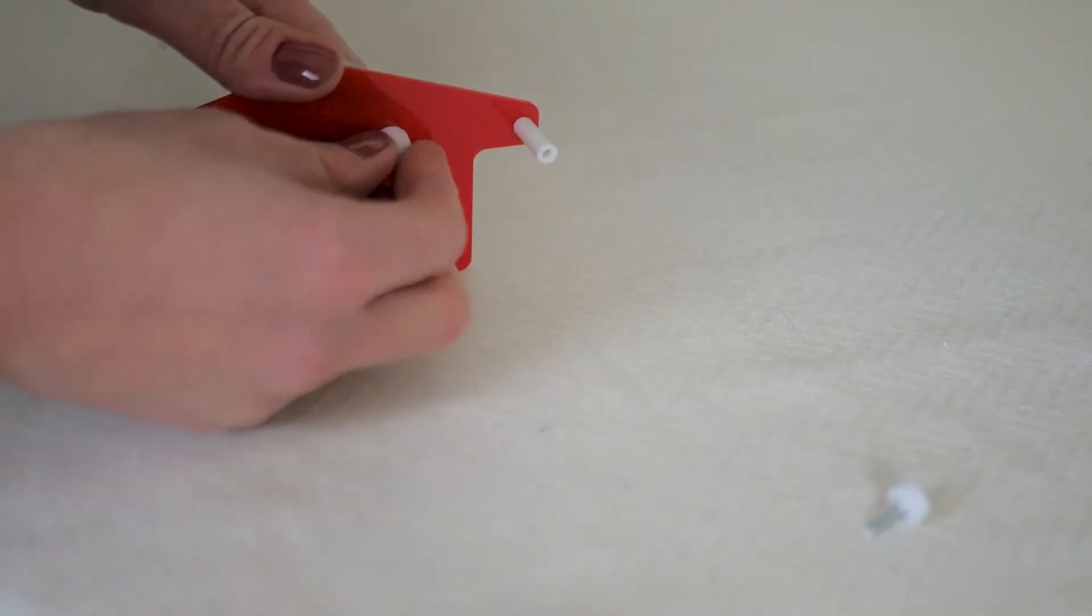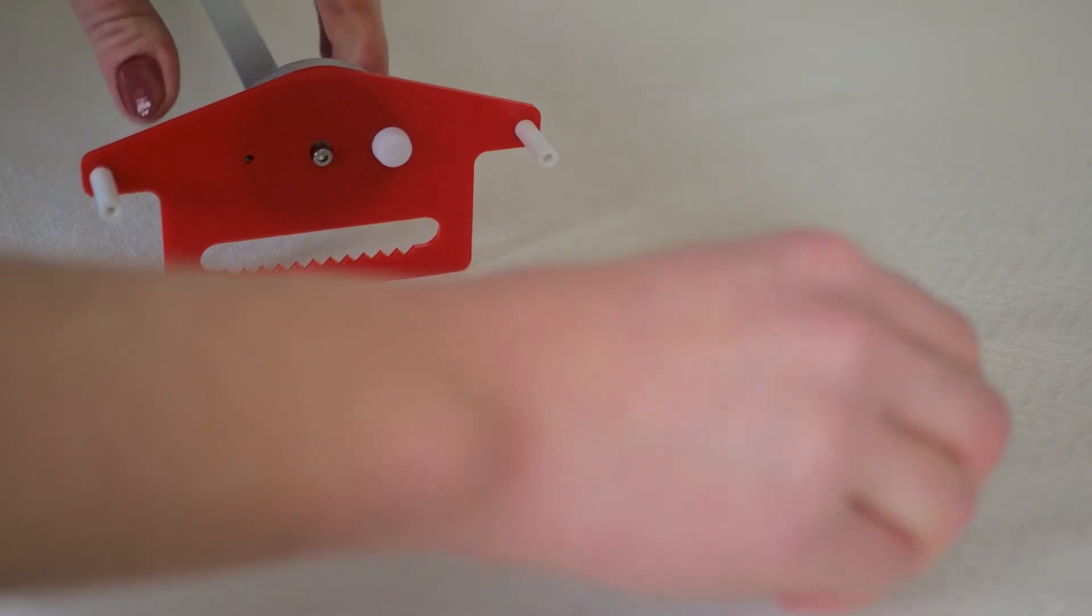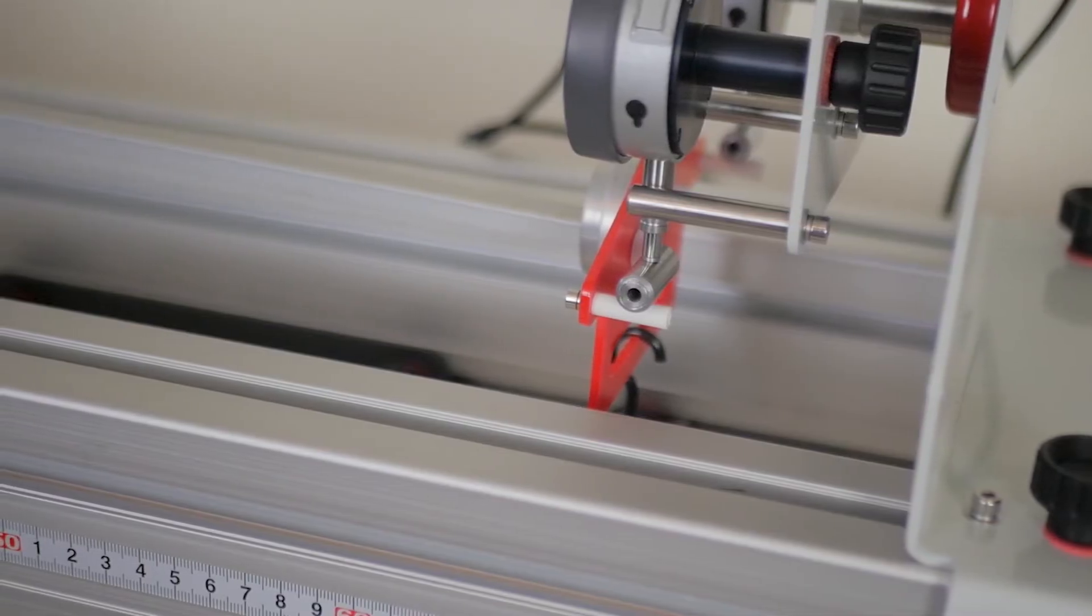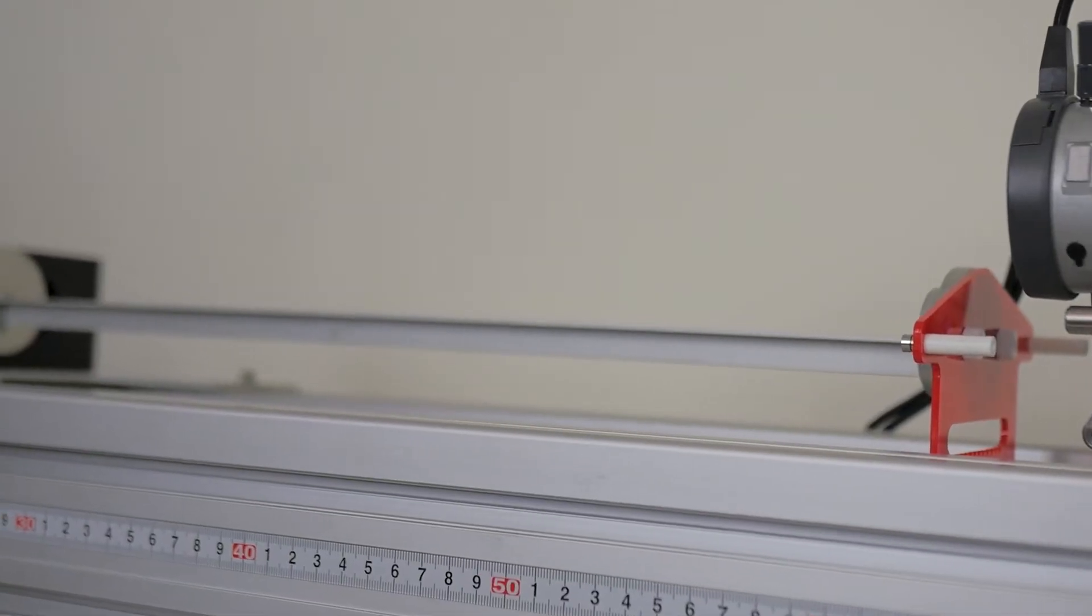When doing the shear center experiment, the shear center plate is attached to the end of the channel section beam and you apply loads at five millimeter spaced positions along the plate.